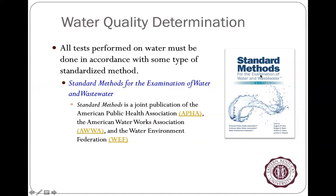Usually those two go hand in hand. There's a book called Standard Methods — probably up to edition 30-something now — published by the American Public Health Association, the Water Environment Federation, and the American Water Works Association. All three entities come together to publish this ongoing, ever-growing document on how to assess water quality.